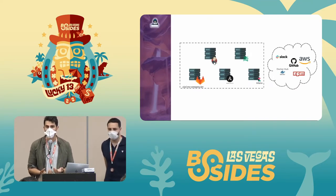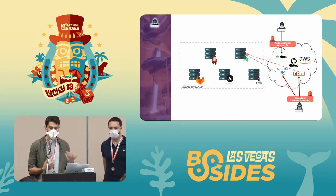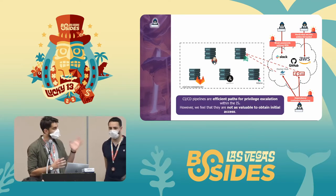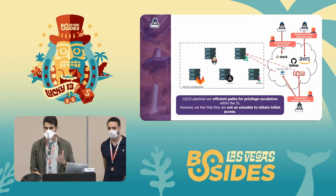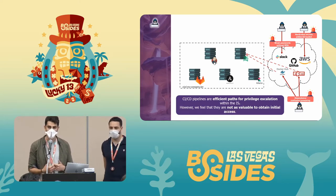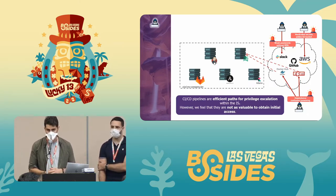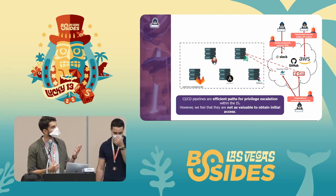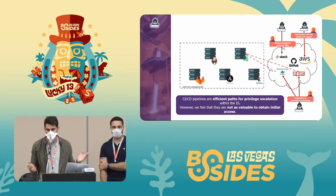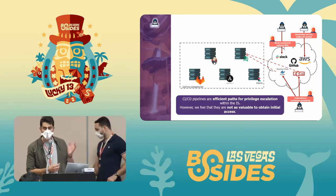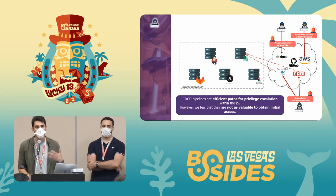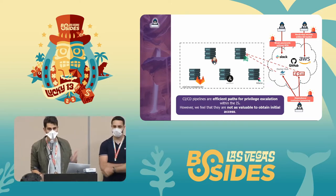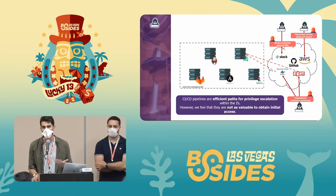The first question when pentesting a CI/CD pipeline is: how do I get in as an external attacker? The first thing to talk about is dependency confusion or dependency hijacking — a vulnerability where you trick the pipeline into downloading a malicious package from the internet and executing it within the pipeline. Another vector is weak passwords: exposed assets and cloud solutions with weak security configuration, no MFA, can be exploited to obtain access and pivot within the pipeline.